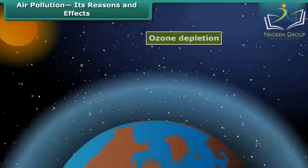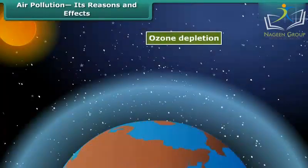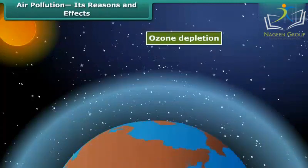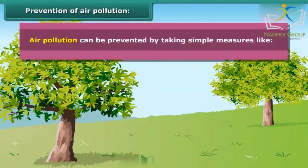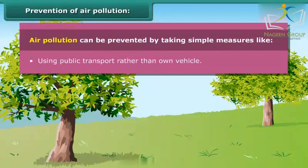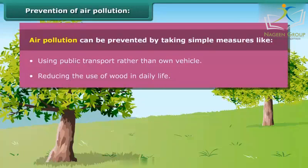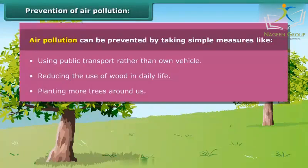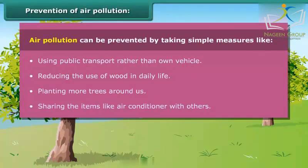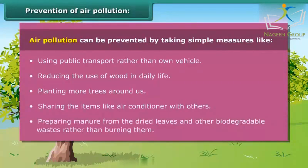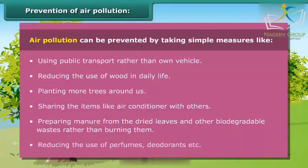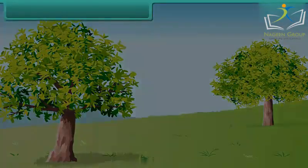Air pollution also creates global problems such as ozone depletion by gases like chlorofluorocarbon, and global warming by carbon dioxide. Air pollution can be prevented by simple measures: using public transport rather than a personal vehicle, reducing the use of wood in daily life, planting more trees, sharing items like air conditioners with others, preparing manure from dried leaves and biodegradable wastes rather than burning them, and reducing the use of perfumes and deodorants.